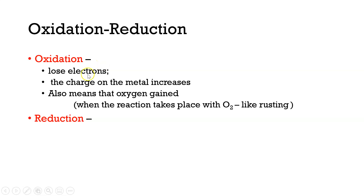Reduction is the opposite of oxidation — remember, they have to go hand in hand. Reduction is the gain of electrons. In order to make an anion, reduction has to take place. So whenever you create an ionic crystal, you are also doing oxidation-reduction. When you create a cation it undergoes oxidation; when you create an anion, it undergoes reduction.